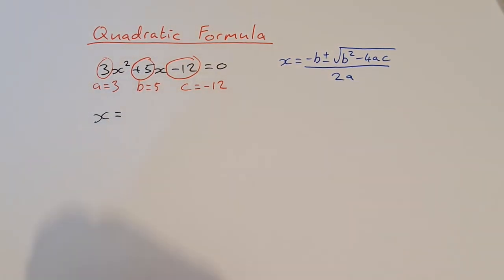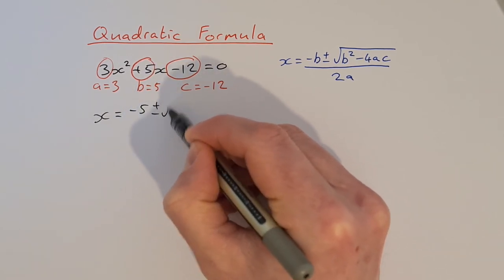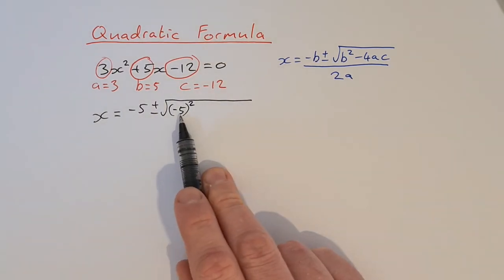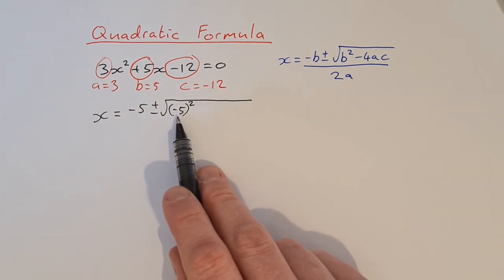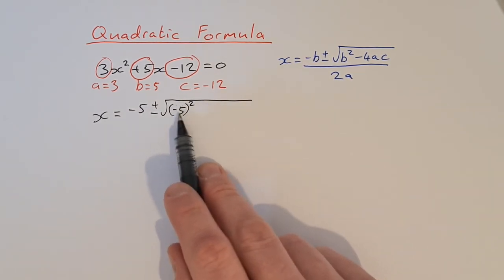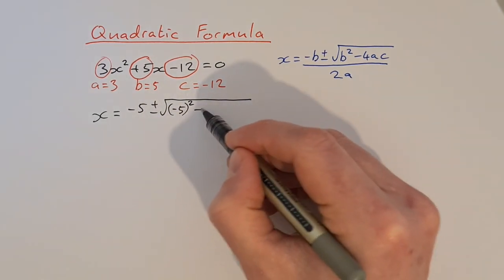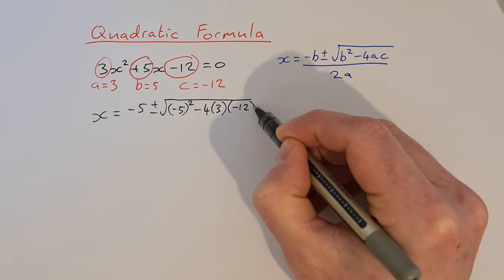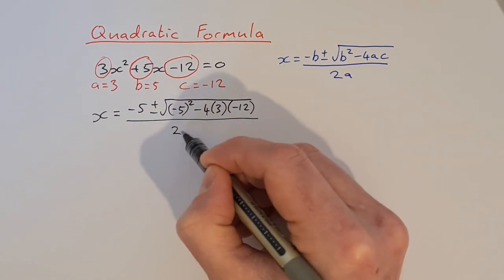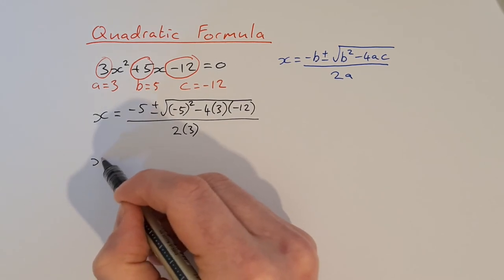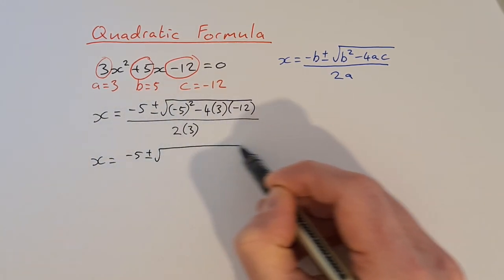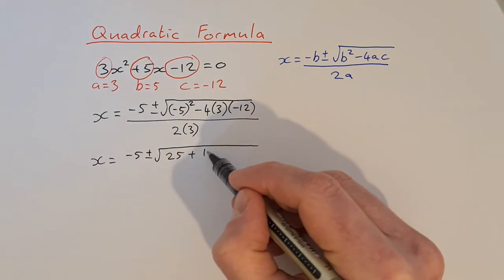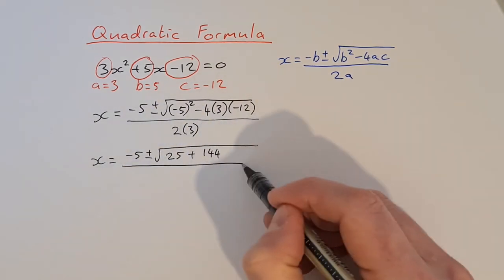So x is equal to minus b, which is minus 5, plus and minus the square root of b squared — so that's minus 5 squared. Be careful with that: put it in brackets and square it, because minus 5 times minus 5 is plus 25 — sometimes your calculator will give you the wrong answer. Then minus 4 times a, which is 3, times c, which is minus 12. That all goes over 2a, which is 6.